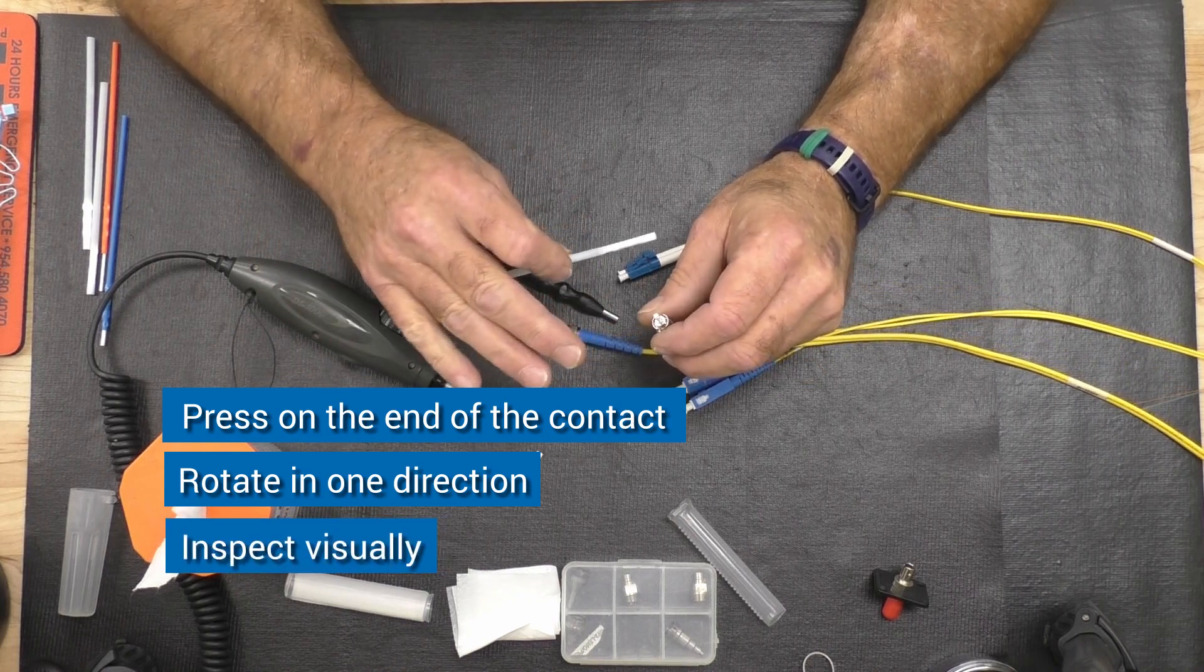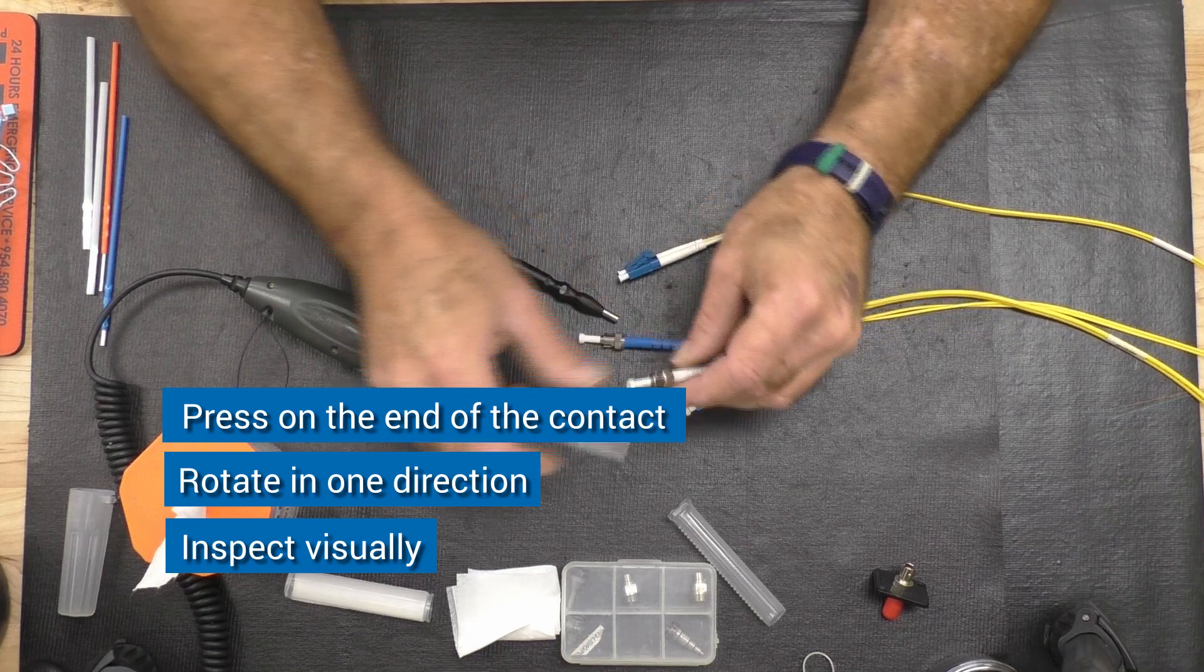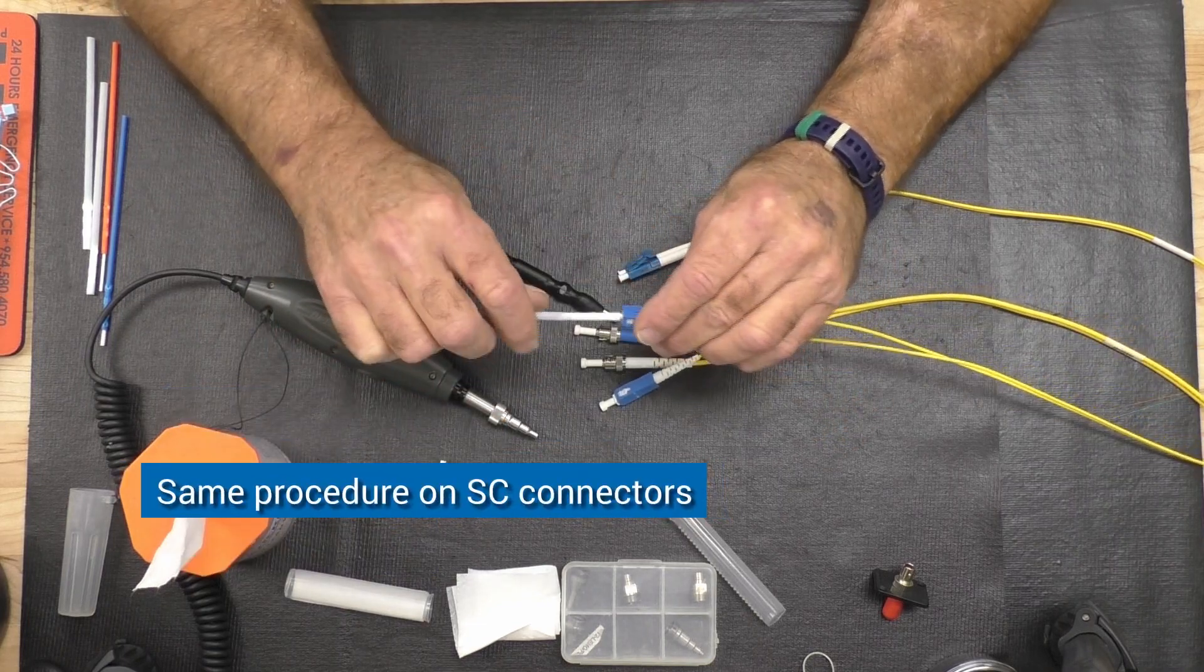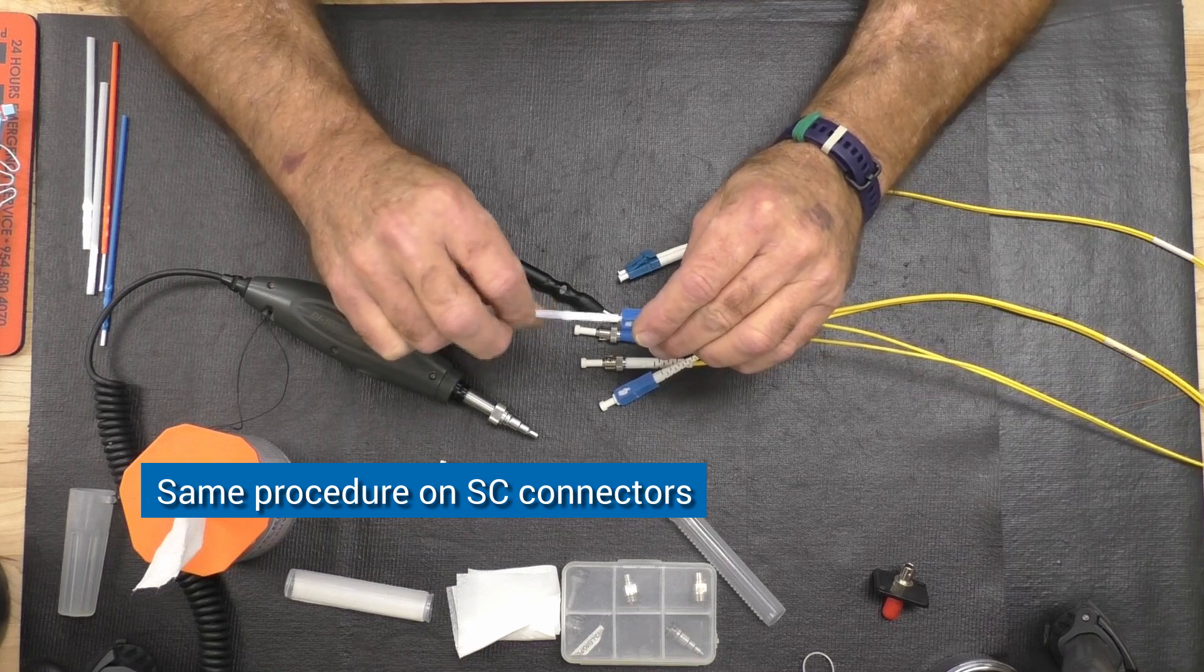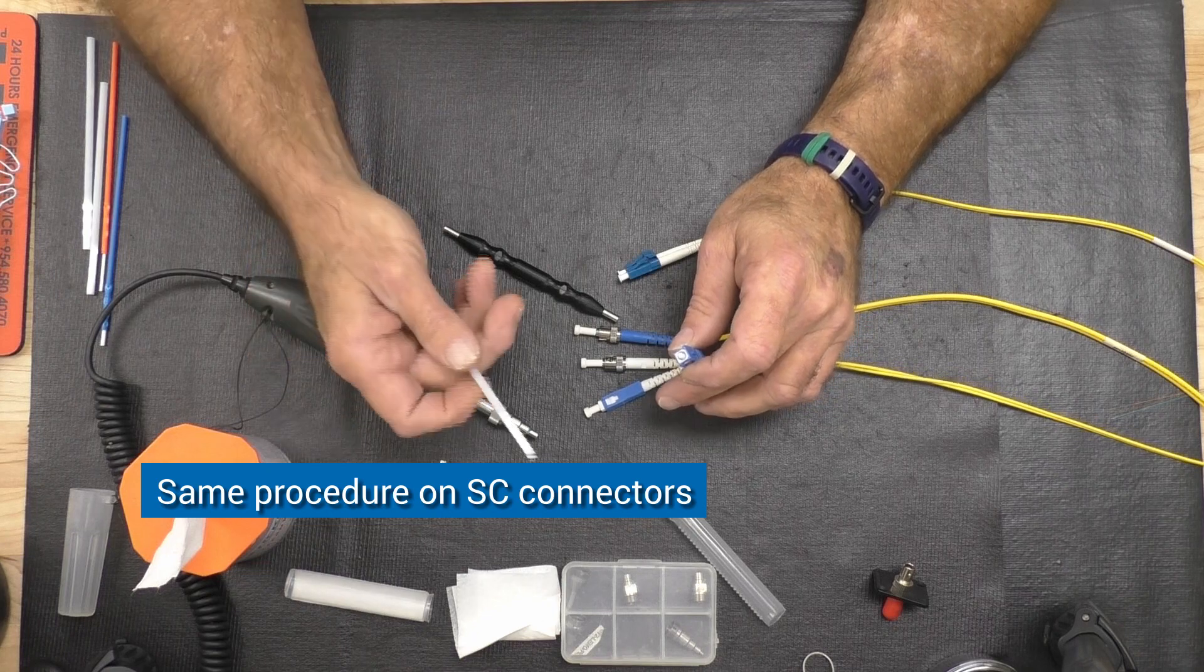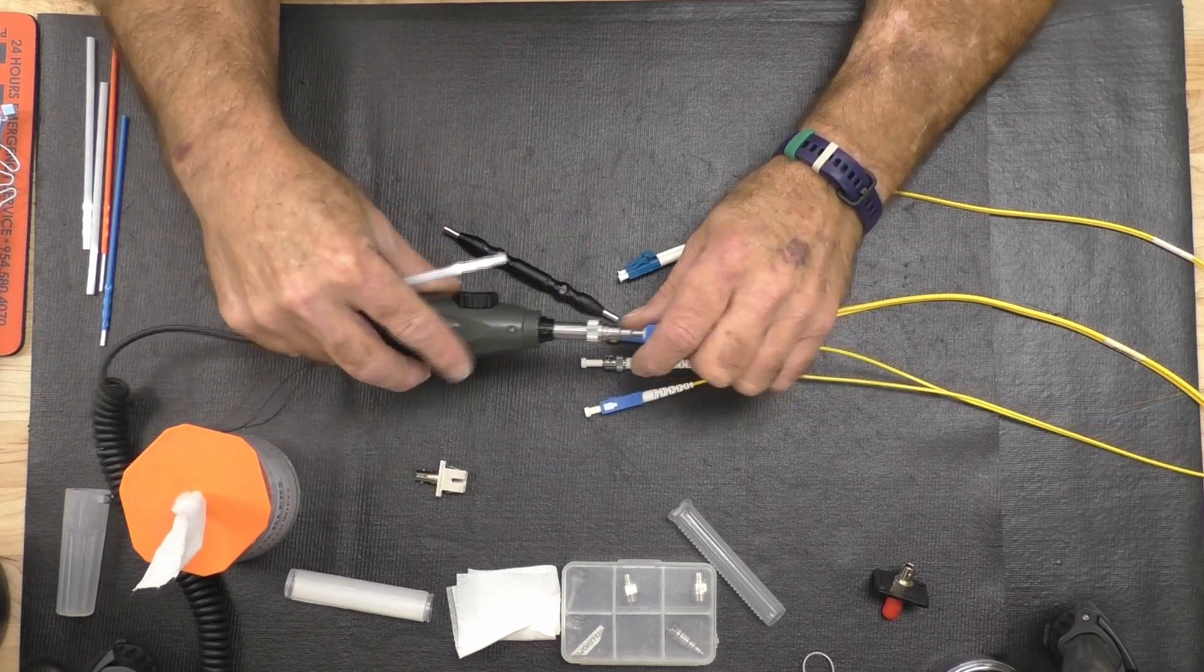Same thing applies to the SC since it's the same size ferrule. Same thing: rotate, rotate, rotate. You can apply a little bit of alcohol to this—between two of them go wet, dry, wet, dry—then visually inspect it. It's very advantageous to use a video scope.